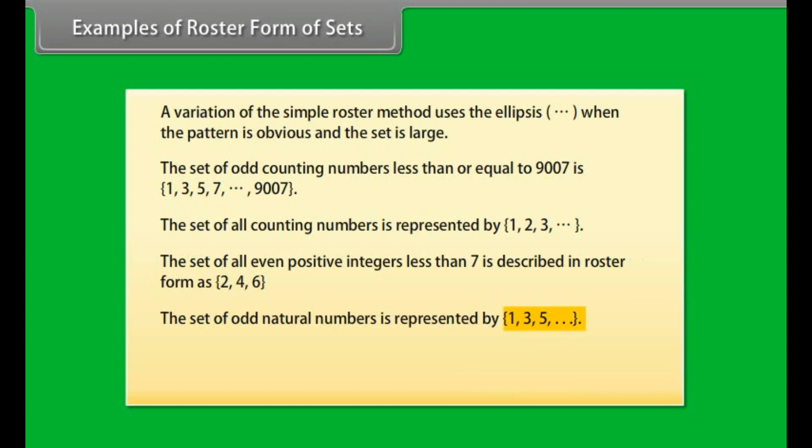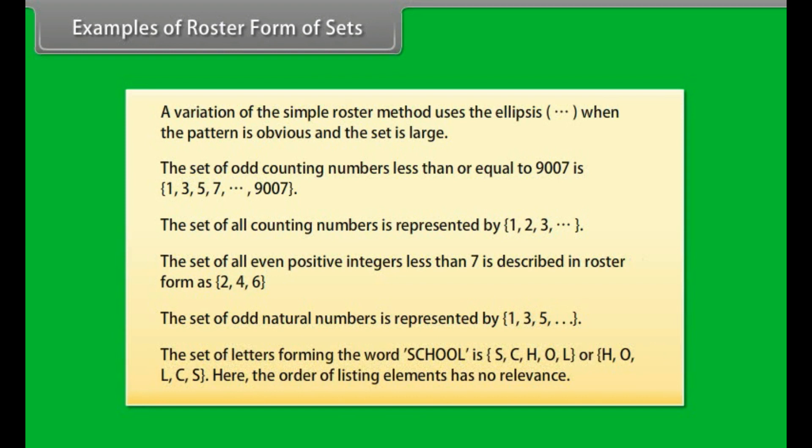The set of odd natural numbers is represented by {1, 3, 5...} and so on. The set of letters forming the word school is {S, C, H, O, L} or {H, O, L, C, S}. Here the order of listing elements has no relevance.